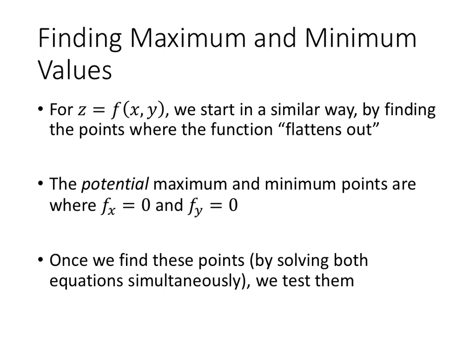When we have a function of two variables, we start in a similar way by finding the points where the function flattens out. The potential points are where both partial derivatives, f_x and f_y, are equal to zero. Once we find those points, we test them just like we did using the first and second derivative tests in the one variable case.